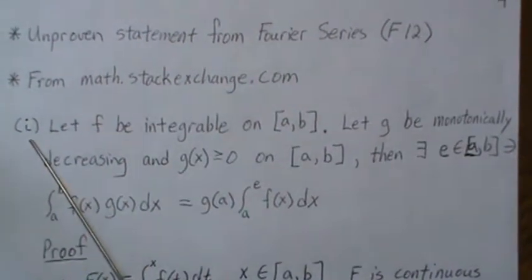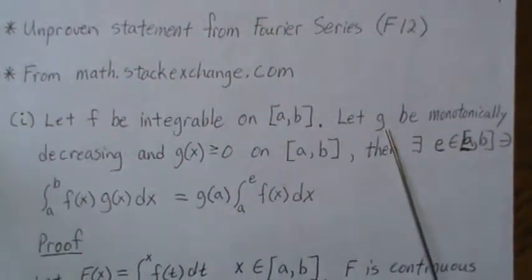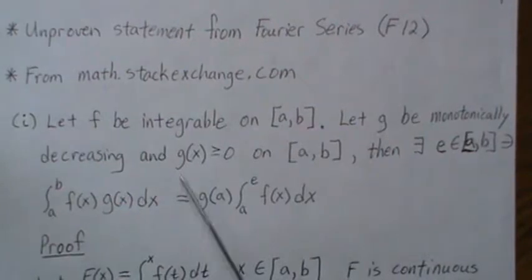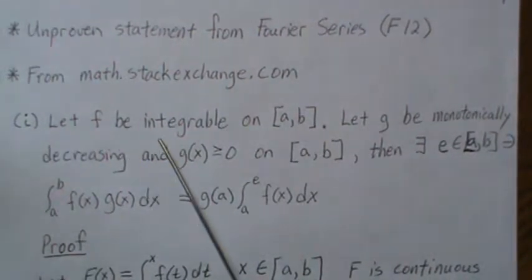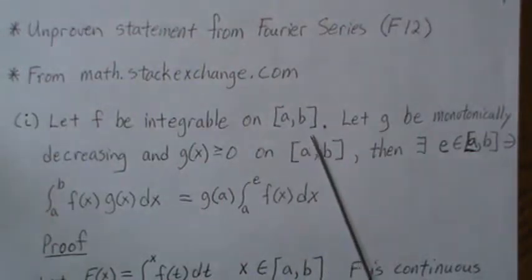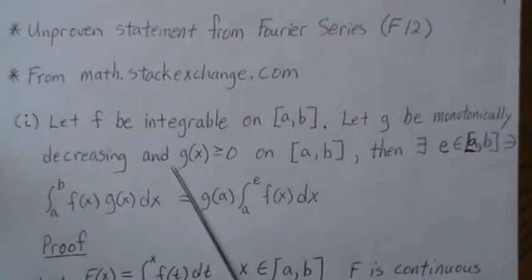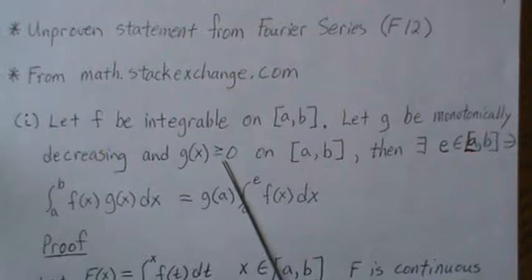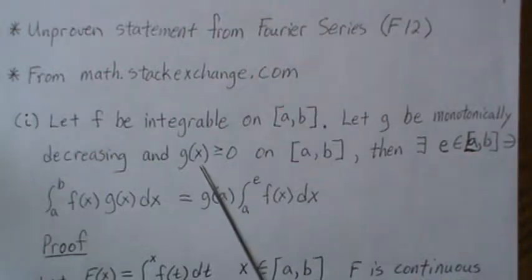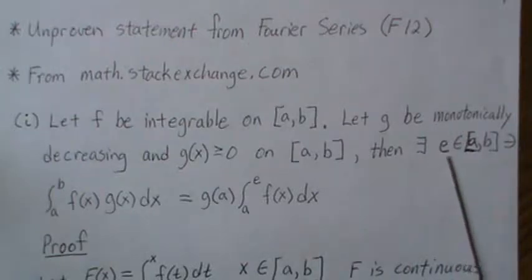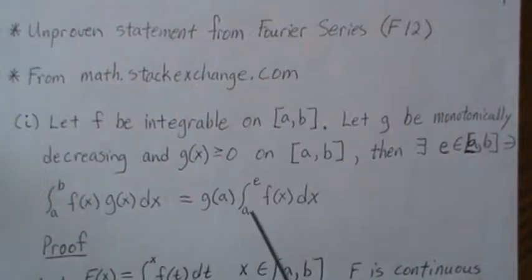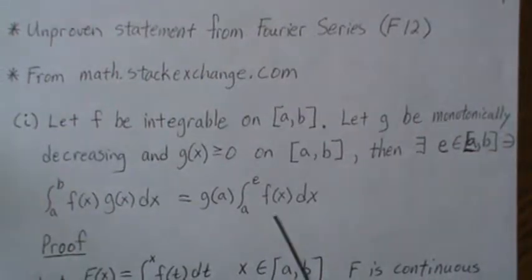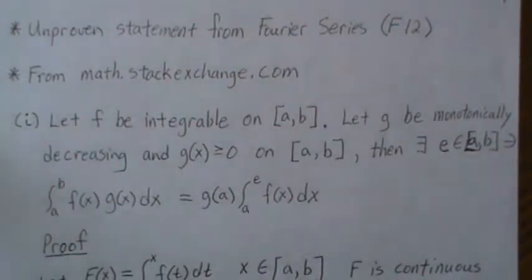There are two parts here. One basically where G is decreasing and one where G is increasing. We'll look at decreasing first. So let F be integrable on A to B and let G be monotonically decreasing and positive for all X in AB. Then there exists an E in this interval AB such that these two integrals are equal.